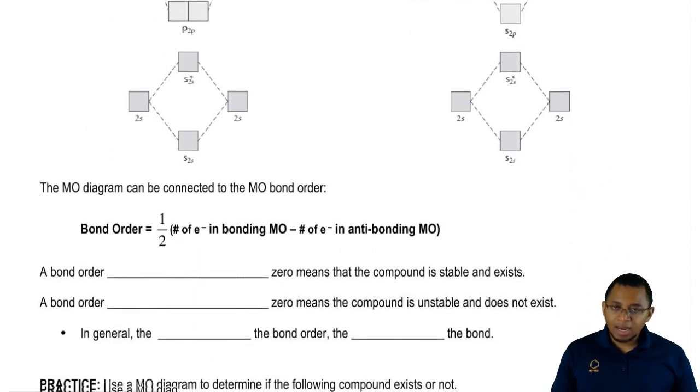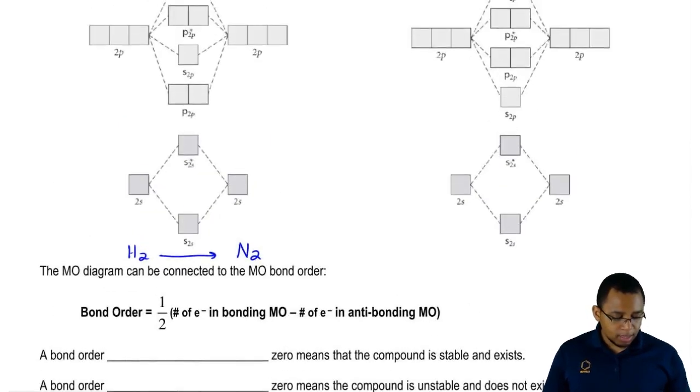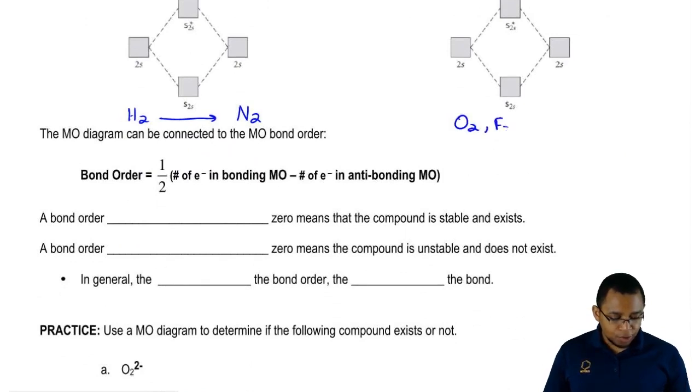We're going to say the molecular orbital diagram that we have, the one on the left and the one on the right, can be connected to a new idea, bond order. First, remember that the one on the left deals with H2, N2, and the one on the right deals with O2, F2, and Ne2.